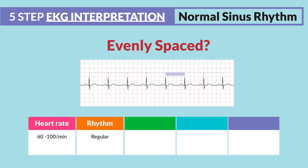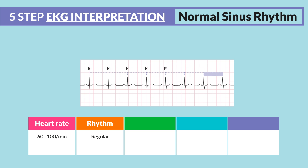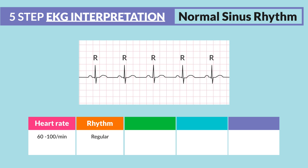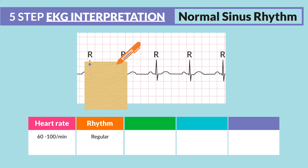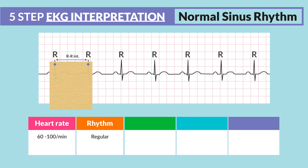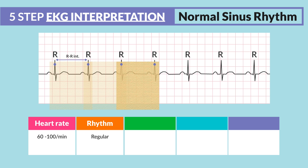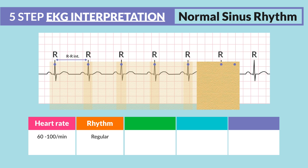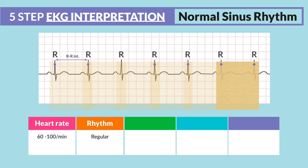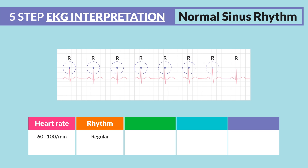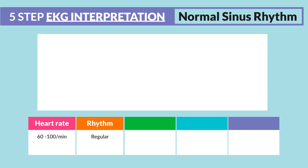Look at the R peaks and see if they're evenly spaced apart. To quickly measure this, simply grab a paper, mark two R peaks, then move the paper over to see if it's evenly spaced. This is called marching it out. The R peaks should be evenly spaced out every single time.